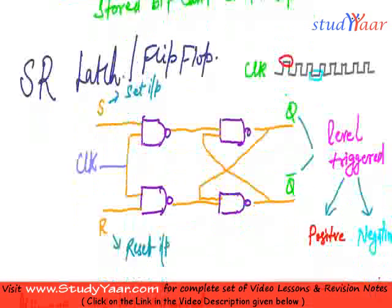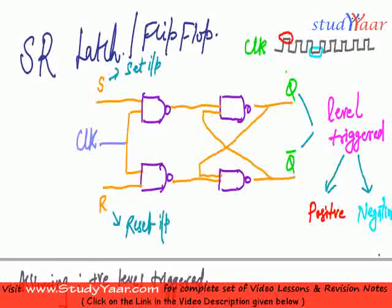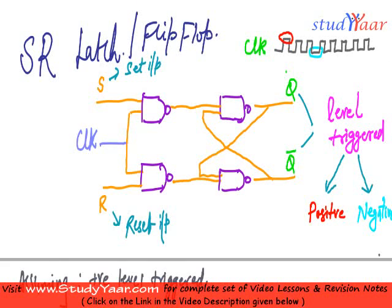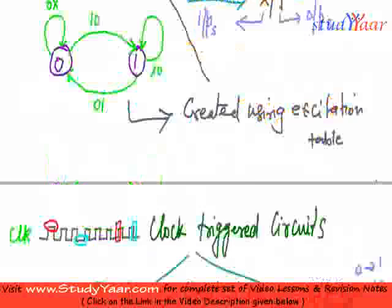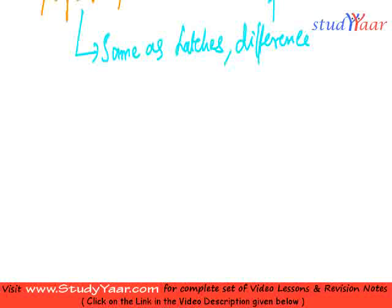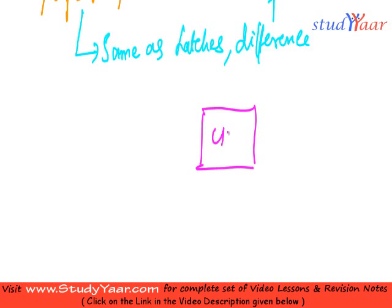So if I have to make this a flip-flop, then what I am going to do is simply insert a differentiator circuit before the clock. So let's suppose this is your circuit.